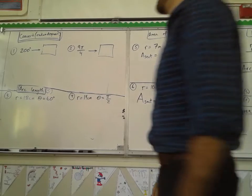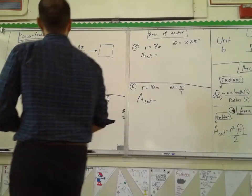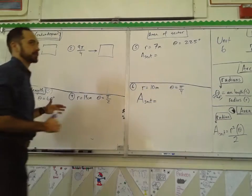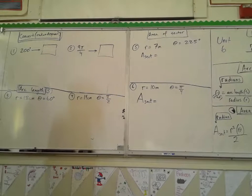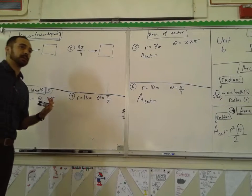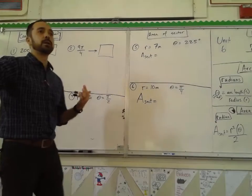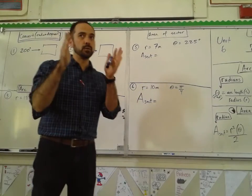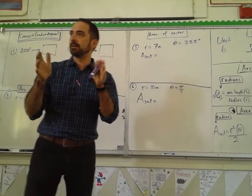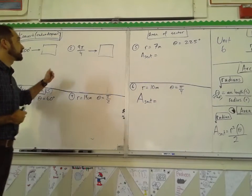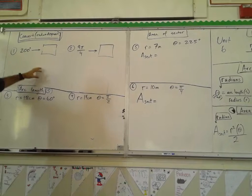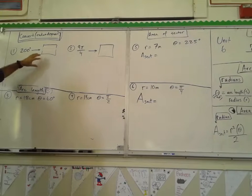All right, so this is Unit 6 reviewing the main topics. We stayed away from conic sections because you have plenty of time for that next year — we just touched on it lightly. The main thing for Unit 6 is getting comfortable with radians, which we'll see a lot next year.